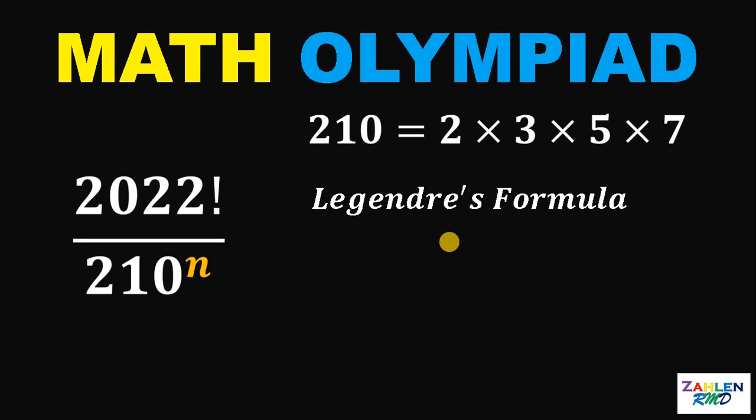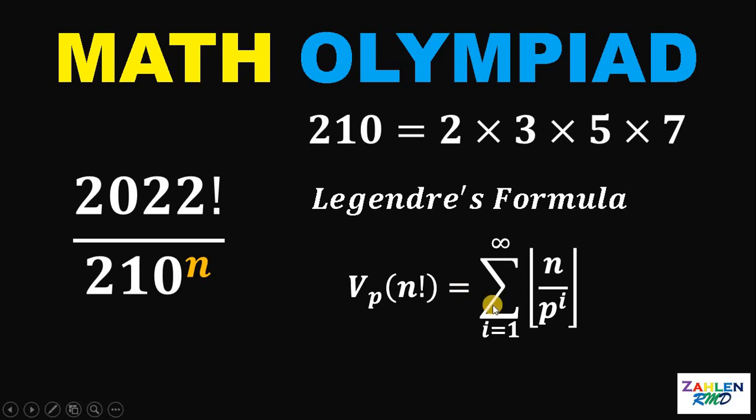For any prime number p and any positive integer n, let v sub p of n factorial be the exponent of the largest power of p that divides n. That is given in this formula. So v sub p of n factorial equals the summation of the floor value of n over p raised to i as i goes from 1 to infinity. This symbol right here is also known as the floor function or the greatest integer less than or equal to x.